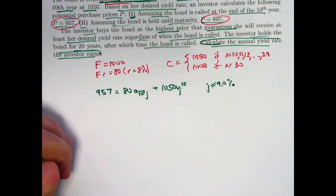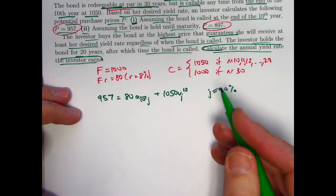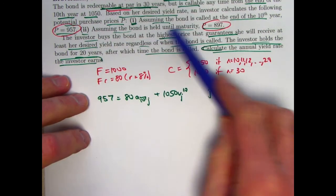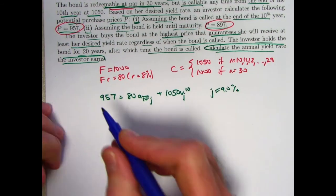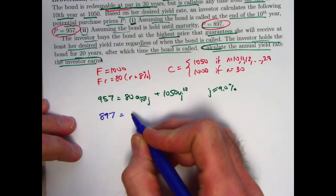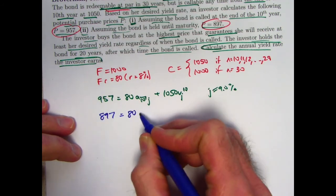Let's check and see. Again, this is not technically part of the problem. You don't really have to do this, but just for your own peace of mind, let's check and see if the yield in this other situation is approximately the same. So, 897 was the purchase price there. The coupons are still 80.